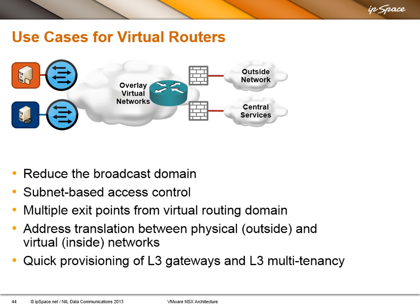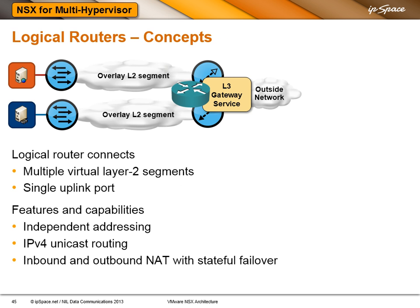In any case, whatever you do, you want it to be done really quickly. In NSX for multiple hypervisors, we have the concept of logical routers. Right now I'm focusing on connectivity with the outside world — we'll get to distributed routing later on, so hold your questions. In the case of connectivity with the outside world, we run Layer 3 gateway service on gateway nodes that we already discussed. The logical router can connect multiple virtual Layer 3 segments with a single uplink port.